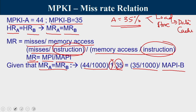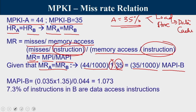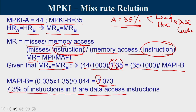Memory access per instruction for B is approximately 1.073. Since every instruction always accesses iCache once (contributing 1.0), the remaining 0.073 represents data cache accesses. Therefore, 7.3% of B's instructions are data access instructions.